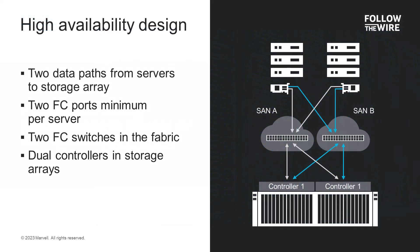That's why Fiber Channel Storage Area Networks, or SANs, are designed for high availability with redundant paths throughout. For each server and storage array in the SAN, there are a minimum of two paths for data to flow back and forth. This requires redundant devices. Fiber Channel HBAs need a minimum of two ports.